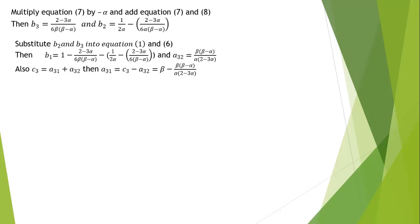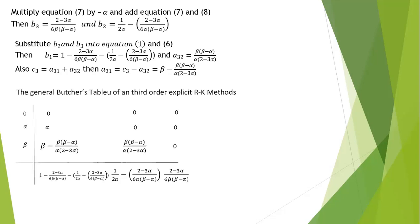Since c₃ equals a₃₁ plus a₃₂, we get a₃₁ equals c₃ minus a₃₂, which gives a₃₁ equals beta minus beta·(beta minus alpha) divided by alpha·(2 minus 3·alpha). The general Butcher tableau for the three-stage scheme can then be written using these expressions. From this general tableau we can derive many different specific schemes by choosing different values of alpha and beta.